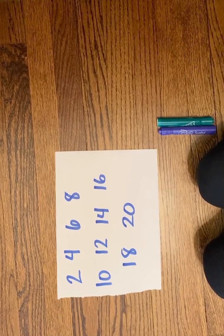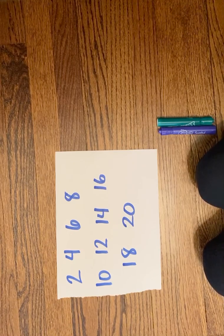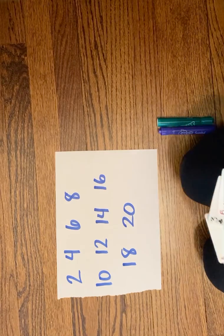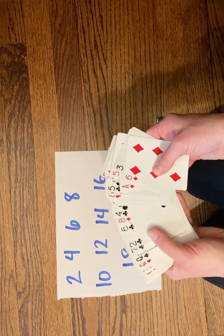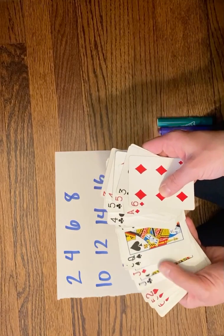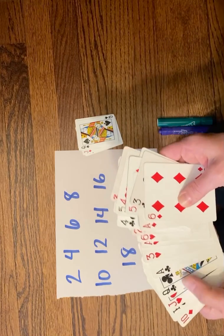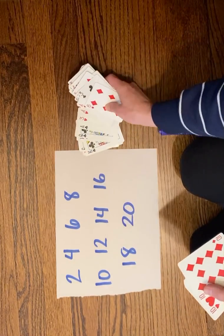This game is called On the Double. We call this game On the Double because we'll be doubling the numbers in our deck. For this game, we will keep all of our cards in except for face cards, so we'll take out all the jacks, queens, and kings, and our aces will be worth one.